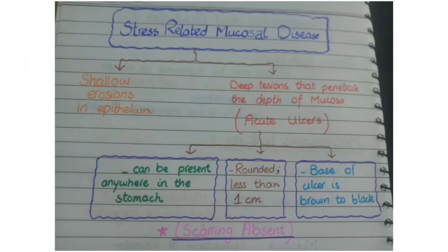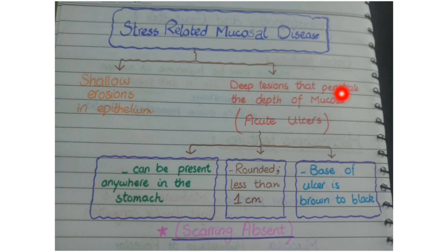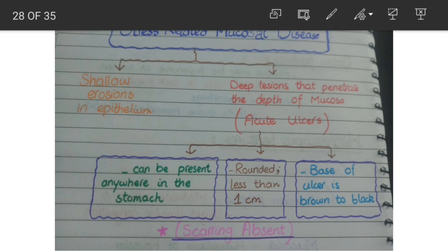Stress-related mucosal disease refers to damage in the walls of the stomach in patients experiencing acute physiological or psychological stress. This disease is visible pathologically as shallow erosions in the epithelium, or as deep lesions that penetrate the full depth of the mucosa — in which case they are called acute ulcers. So you either see erosions or acute ulcers.